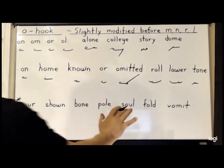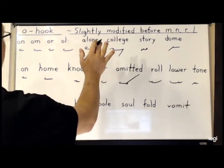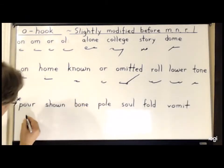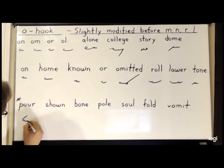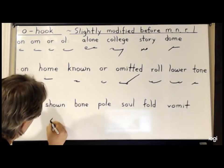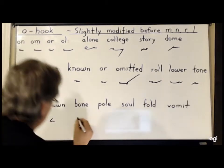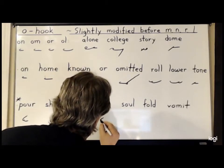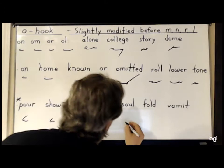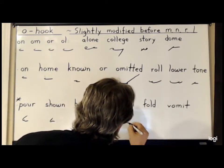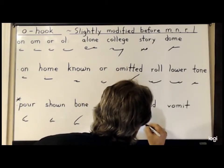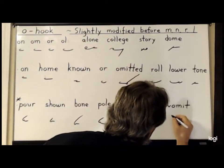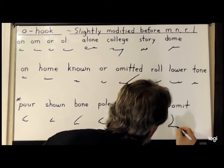Now this rule does not apply when a downstroke comes before an O hook, since it joins to downstrokes without an angle. As in the word 'poor', it would be P-O-R. For 'shown', S-H-O-N. For 'bone', B-O-N. For 'pole', P-O-L. For 'sole', S-O-L. For 'fold', F-O-L-D. And finally, 'vomit' is V-O-M-E-T.